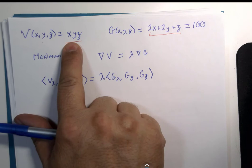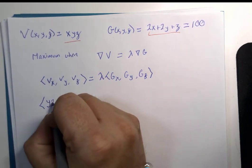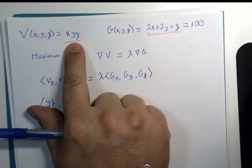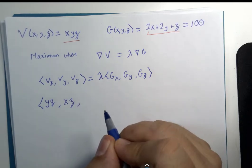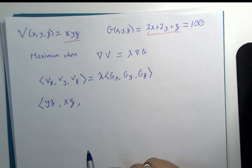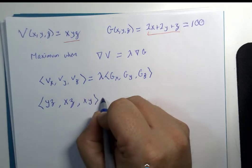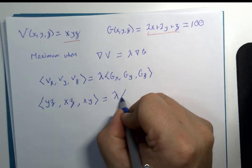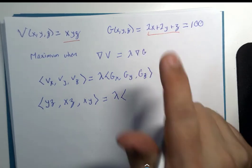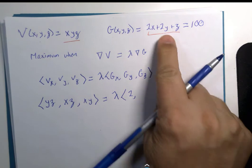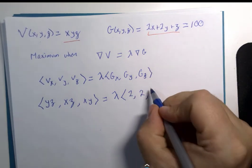The X derivative of this function. Well, derivative of X is 1, leaving me Y times Z. The Y derivative will be X times Z. Now you fill in the Z derivative before I do. Good. X times Y equals lambda times. Oh, what is the X partial derivative here? Well, that's right, it's 2. The Y derivative is also 2. And the Z derivative? Well, that's correct, it's 1.